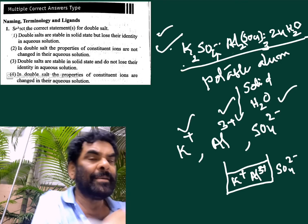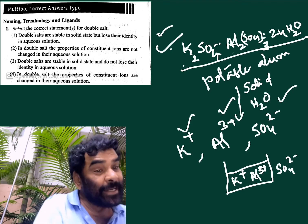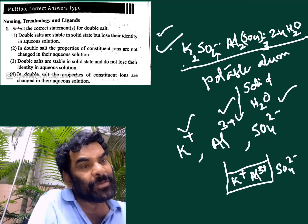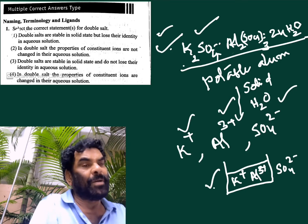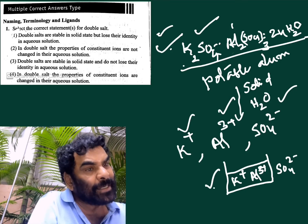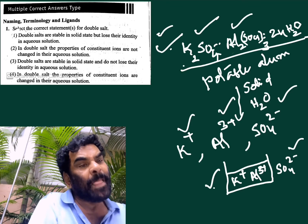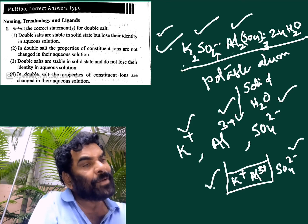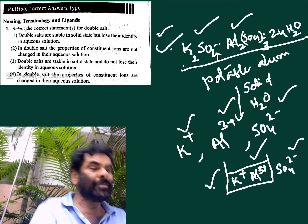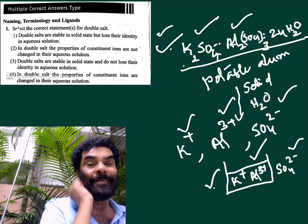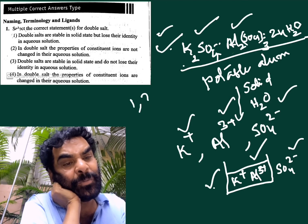The ionic properties are not changing. The solid form gives the test for potassium ion, and the aqueous solution also gives the test for potassium ion. The solid gives the test for sulfate ion, and the aqueous solution also gives the test for sulfate ion. Similarly for aluminum ions. So both statements 1 and 2 are correct.